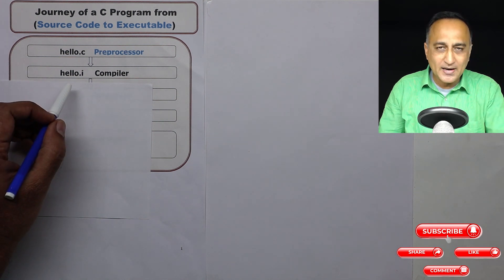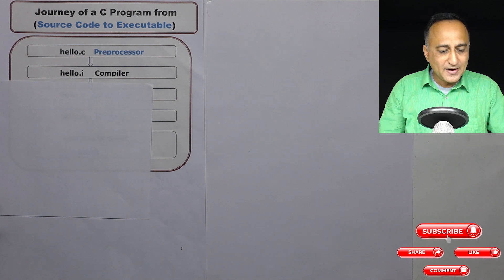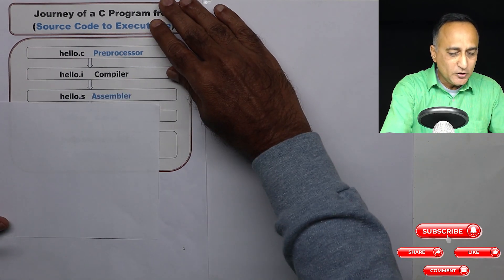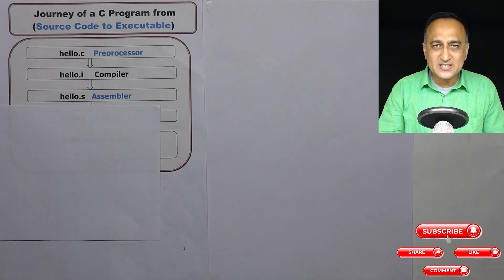This hello.i is then next passed on to the compiler. The compiler takes hello.i and converts it into a file called hello.s. Hello.s indicates that the compiler has taken your source program and converted it into assembly language code. That's why you have the extension .s.